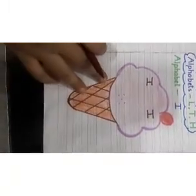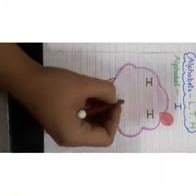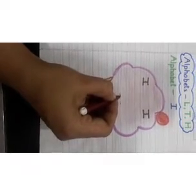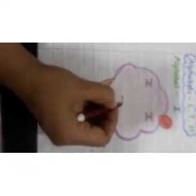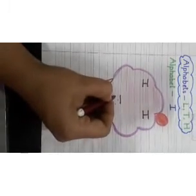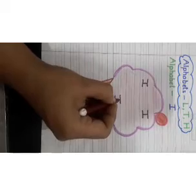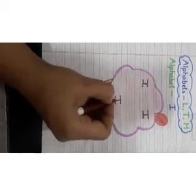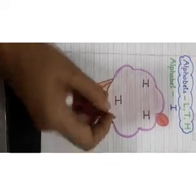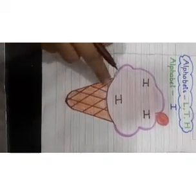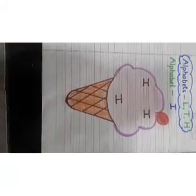This is the alphabet I. Again — sleeping line, sleeping line, standing line. This is alphabet I.